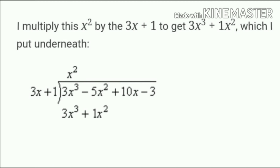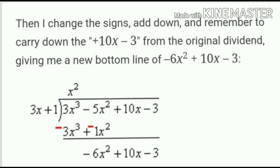We subtract, and since subtracting removes the bracket, all signs inside change. So +3x³ becomes -3x³ and +x² becomes -x². The 3x³ terms cancel each other out.